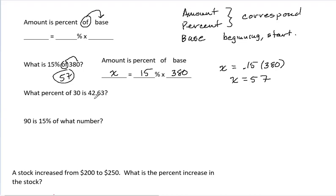What percent of 30 is 42.63? What percent, so that's our unknown, of 30, that signals the base, is 42.63. Now notice that 42 is bigger than 30, so I'm expecting an answer greater than 100%. Let's set up the math.